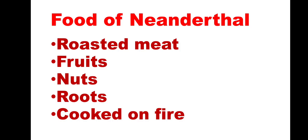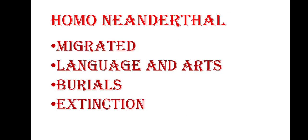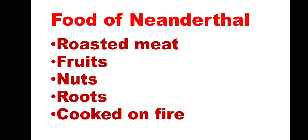Their brain was developing and they were getting more time to think. Earlier, Homo habilis and Homo erectus were eating mostly raw meat, which took more time to chew and digest. But as these people were roasting meat and flesh, they got time to think and invent new things. Along with roasted meat, they also ate fruits, nuts, roots of plants, and other edible plants.